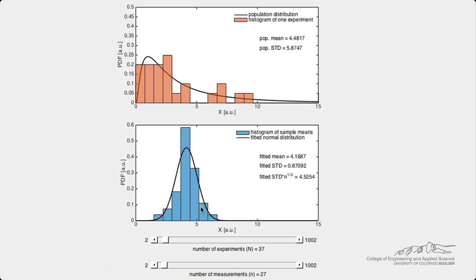Let's fit a normal distribution to these sample means and display the fitted mean and the fitted standard deviation. We can now compare the fitted mean to the population mean and the fitted standard deviation times the square root of n to the population standard deviation.